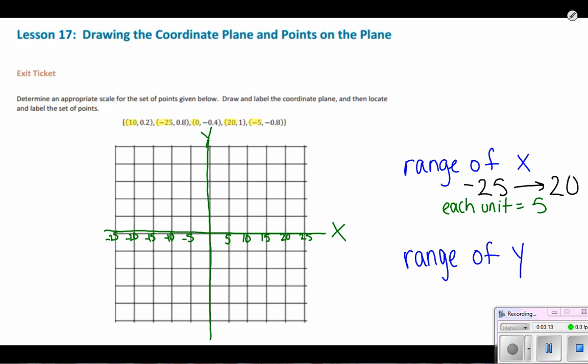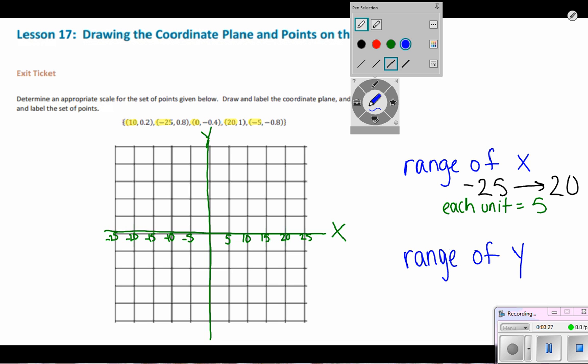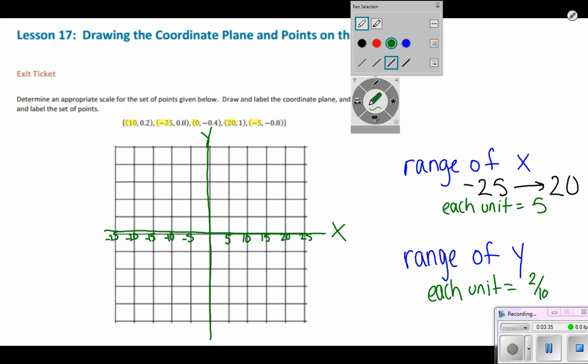And they're all greater than zero, but less than one whole. So thinking about that, I probably could have each unit equaling 2 tenths. I can write it as a fraction or I could write it as a decimal.